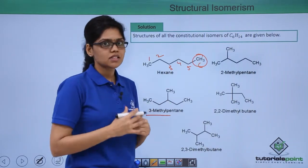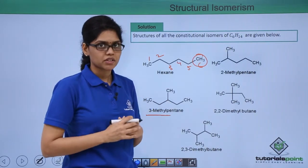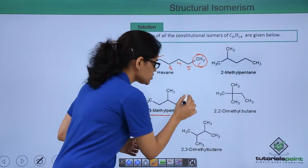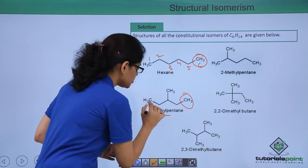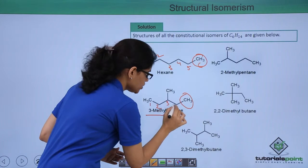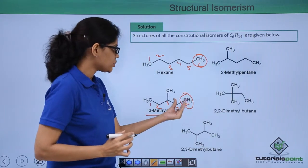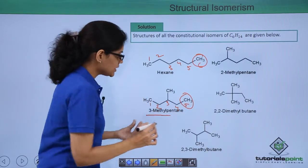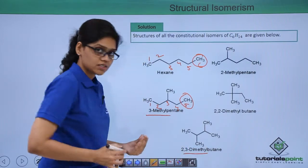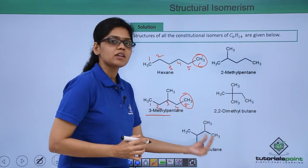Let us now try to further change the position of methyl groups with respect to each other. Let's change this particular methyl group, and if you try to number it, you get something like this. If I change this methyl group to a position like C2, then you end up getting a structure like this, which is 2,3-dimethylbutane.